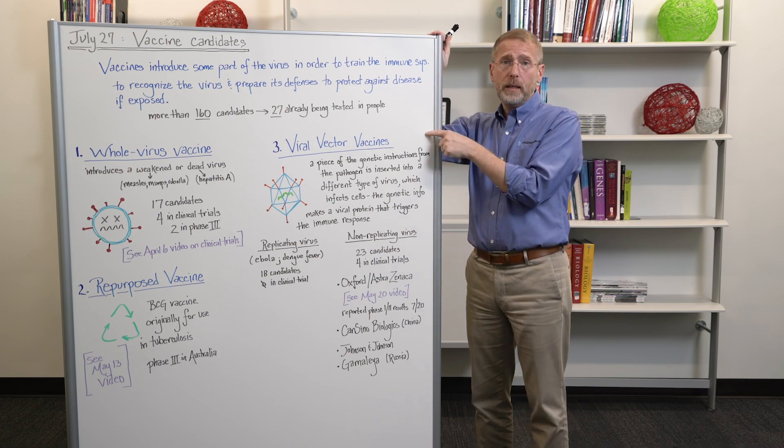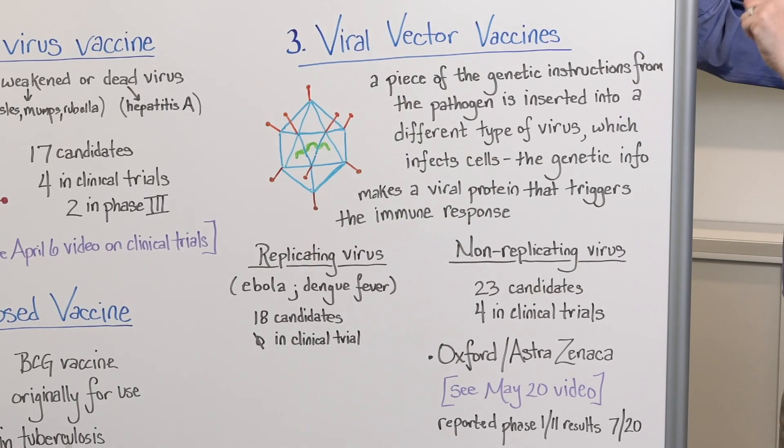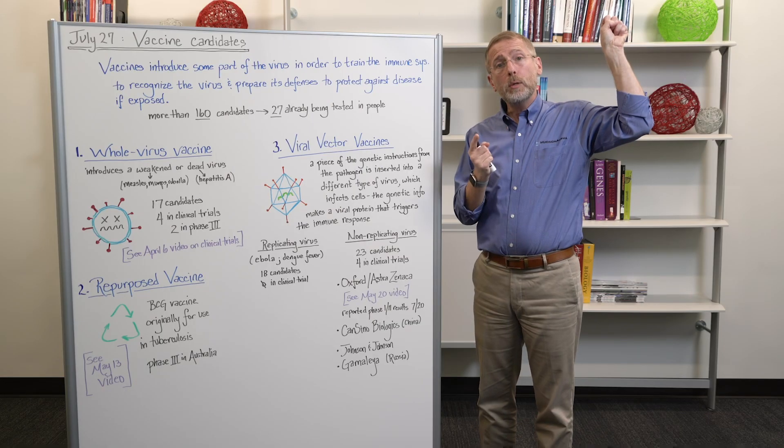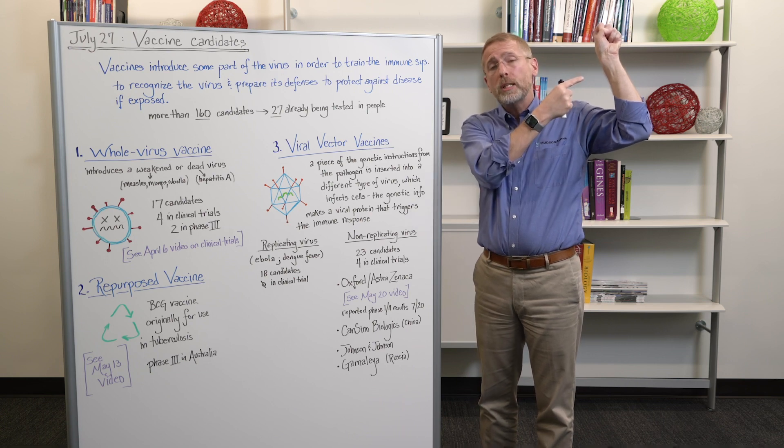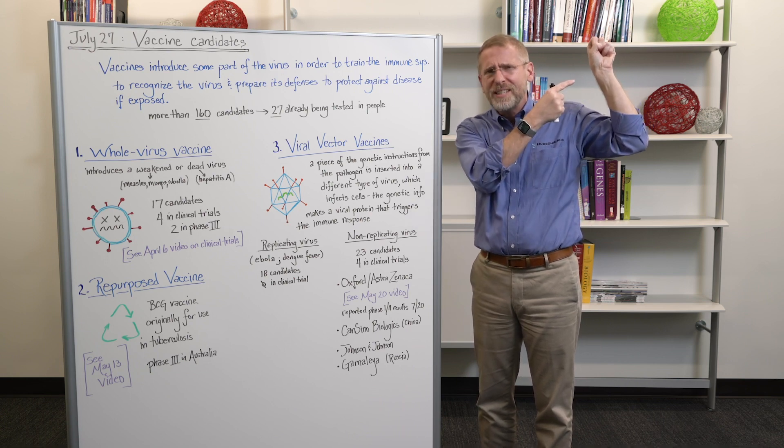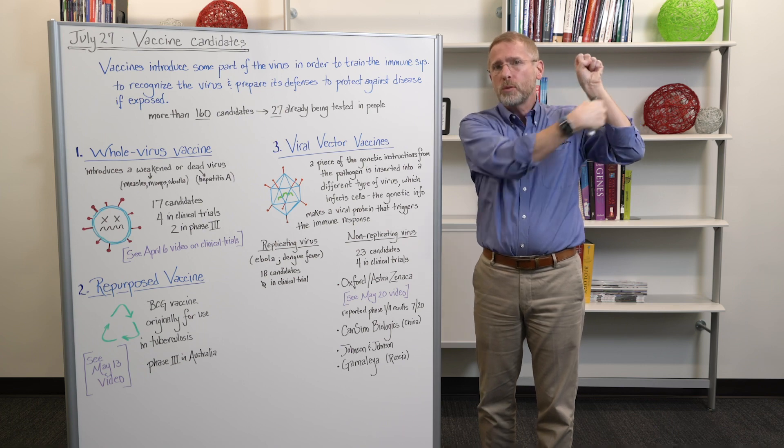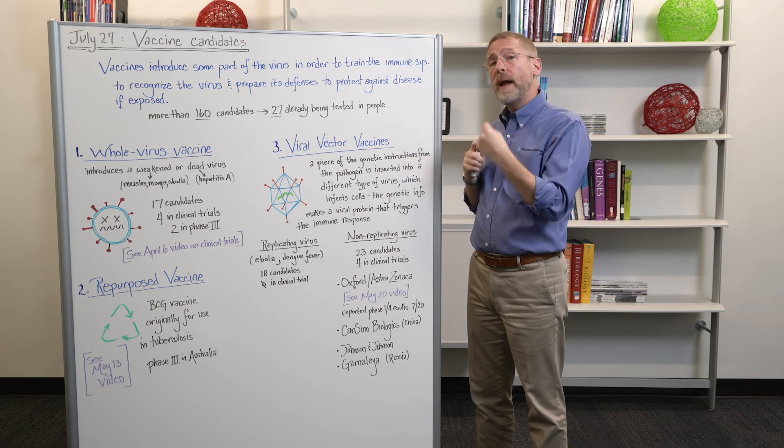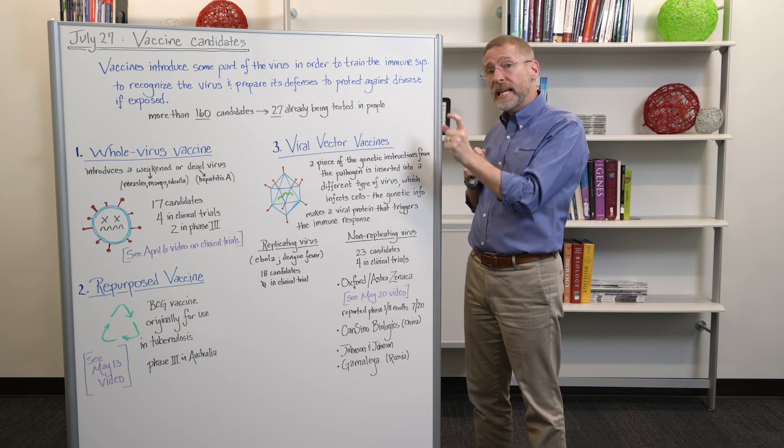So that's also in phase three trial in Australia right now. Okay. Category three, category three and category four are designed to get a piece of the genetic instructions from the SARS-CoV-2 virus into our cells so that our cells take that bit of instruction, read it, make one of the viruses proteins and sit it on the outside of our cells. And our immune system sees this viral protein on the outside of our cell and says, I've not seen that before. That seems strange and builds an immune response against it.